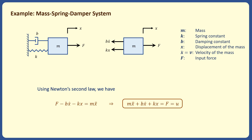The first way to represent the dynamical model of a system is by using a differential equation. In this example, the dynamical model is shown using a second order differential equation.